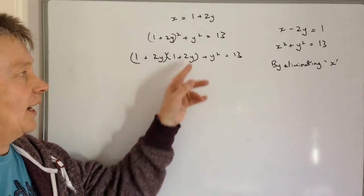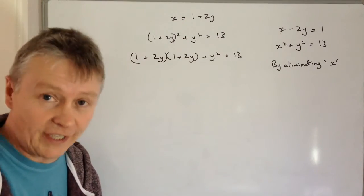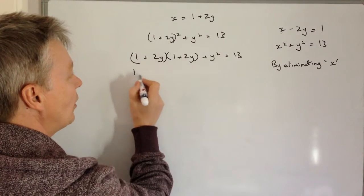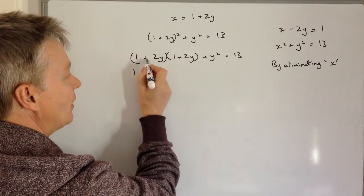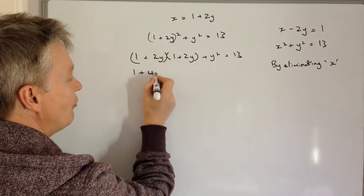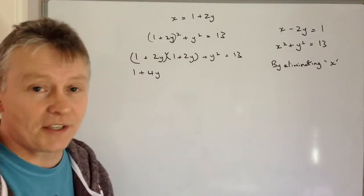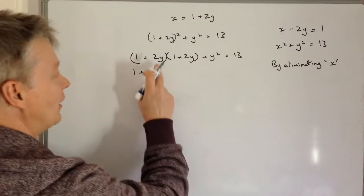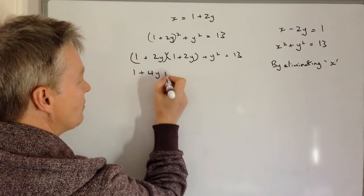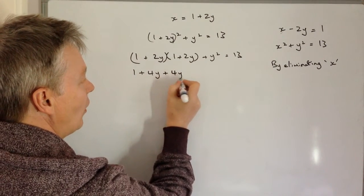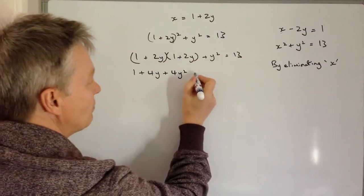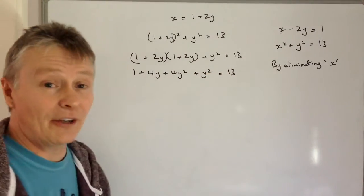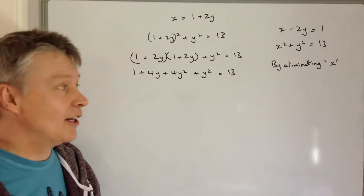So we've got two brackets there, I'm going to multiply those out. So 1 times 1 is 1, plus 2Y, plus 2Y, plus 4Y. I appreciate I've missed a step there, but hopefully you'll be okay with that. And I've got 2Y plus 2Y, plus 4Y squared, and that's plus Y squared equals 13.